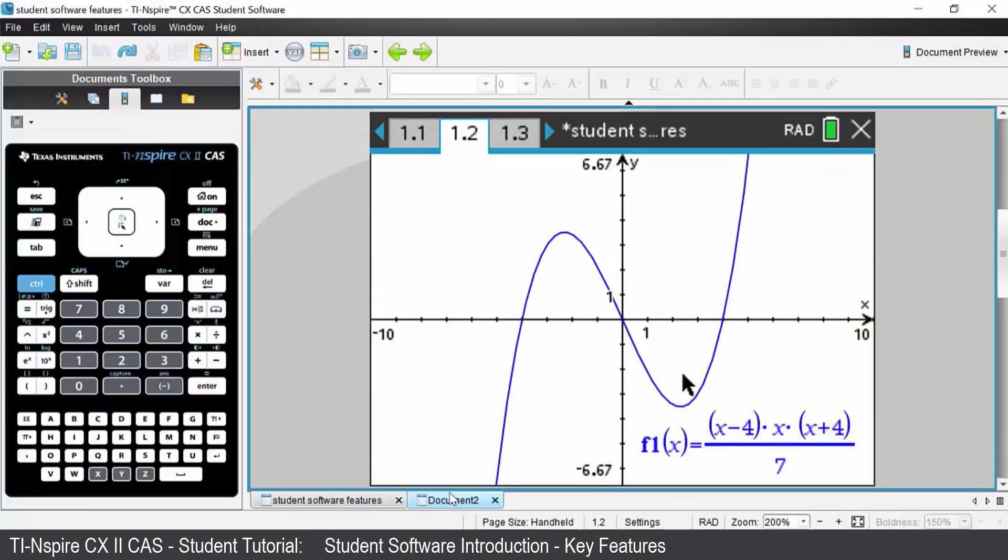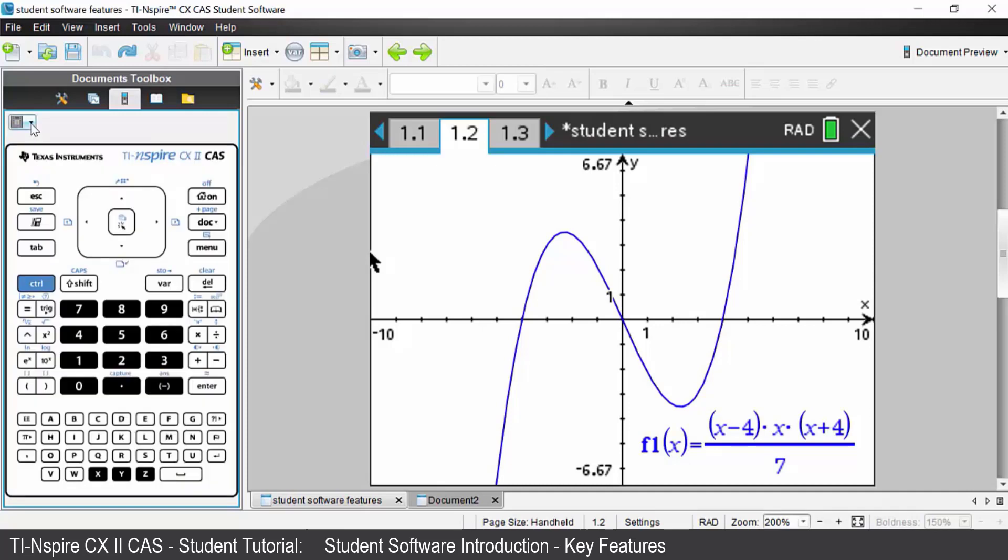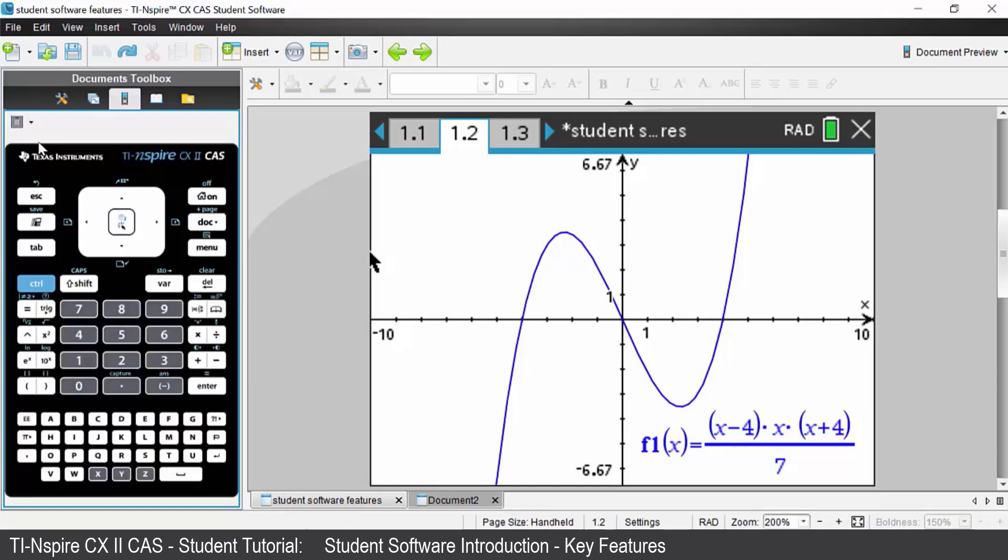Back on the software, coming along to the documents toolbox. At the moment we are in the traditional handheld view here. If you click on that little icon here you can change the look to lights, you can change it to outline, etc. So we'll go back to dark.